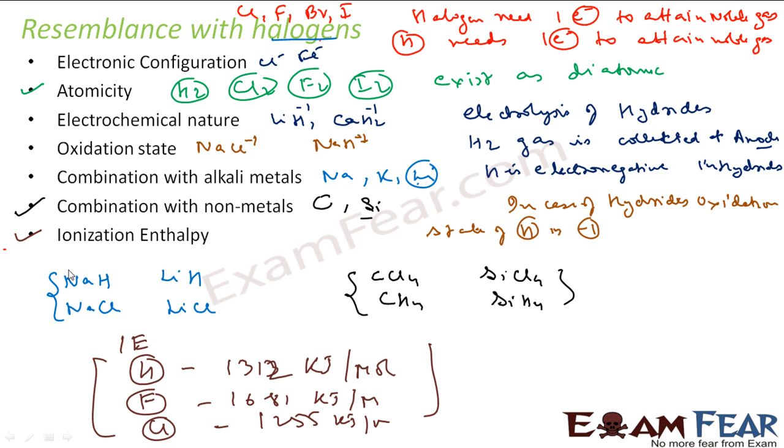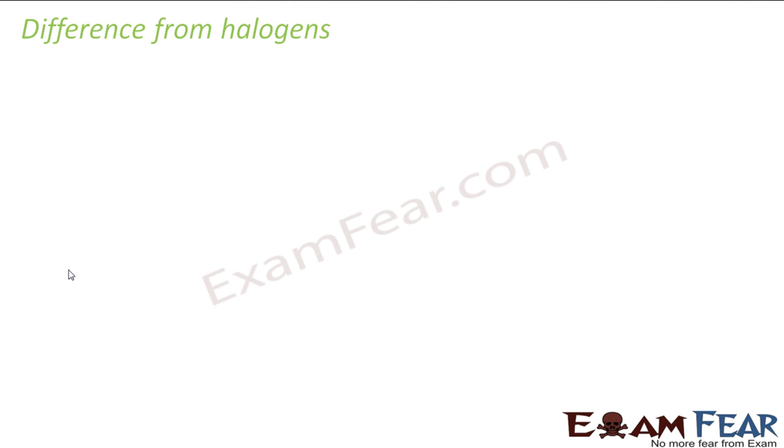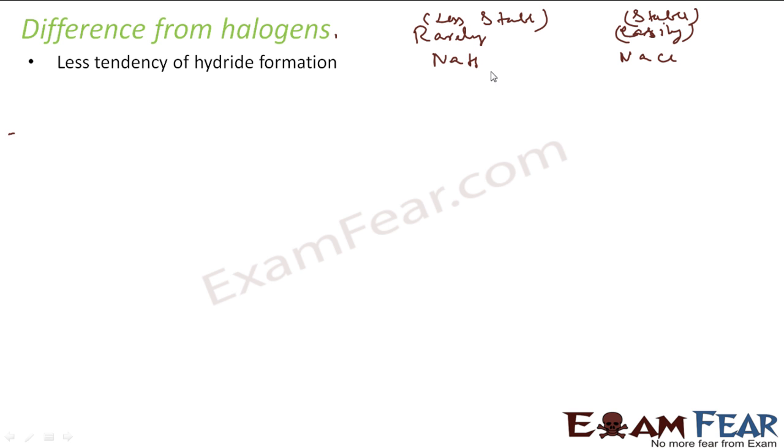But there are some differences too with halogens. So let's understand the difference from halogens. The first one is less tendency to form hydrides. So if I see NaH and NaCl, both exist but this exists rarely and this you can get easily. This is more stable, this is less stable. So if you see both have tendency to form hydride but with halogens it is better. When alkali metals form hydride combined with hydrogen and chlorine both, the tendency is less.